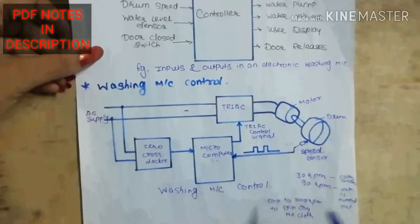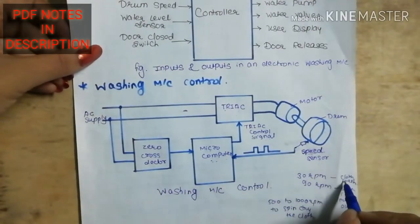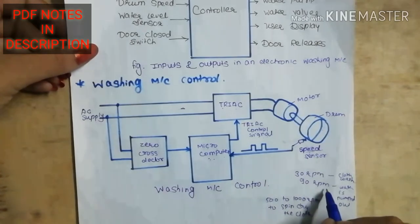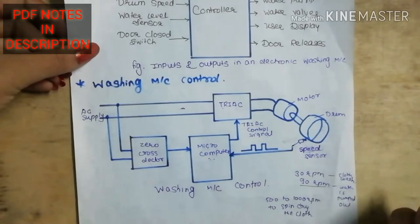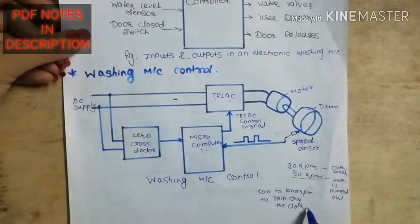The low speed of the motor is regularly 30 RPM for washing, and the intermediate speed of the motor is 90 RPM for water pump boost. The highest speed is 500 to 1000 RPM to spin and dry clothes.